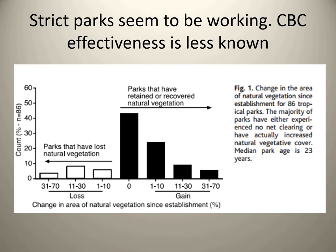Strict parks, the data shows, seem to be working at least in some respect in terms of vegetation recovery. The long-term effectiveness of CBC is overall less known — it hasn't been around as long. On a graph showing the change in the area of natural vegetation since establishment for 86 tropical parks, the majority of parks have either experienced no net clearing or have actually increased natural vegetative cover. The median park age is 23 years. Overall, the majority seem to have at least maintained the environment, if not potentially improved it — though it depends on how you're measuring biodiversity.